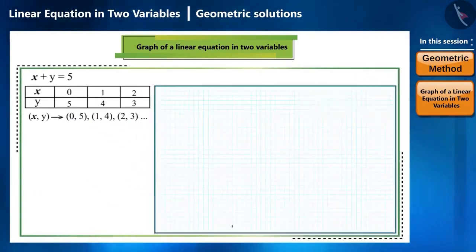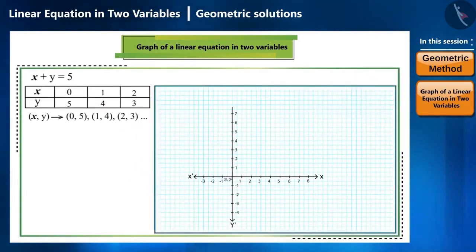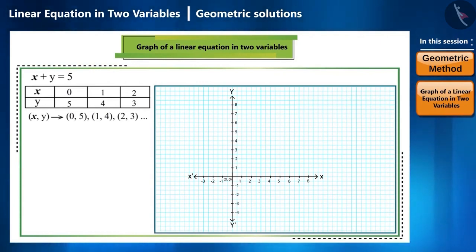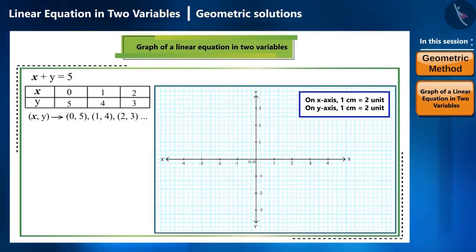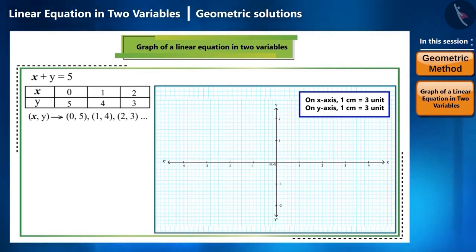Let us draw x and y axis on a graph paper. Mark the units carefully on both the axis. Generally, we take 1 cm is equal to 1 unit. These units can also be increased or decreased according to the points. We can take 1 cm is equal to 2 units, or 1 cm is equal to 3 units, etc.